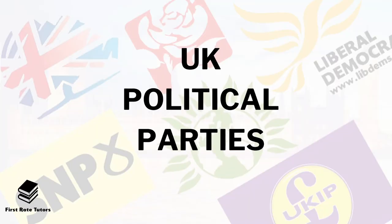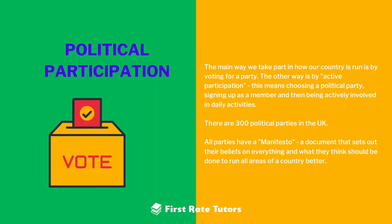When it comes to the UK and specifically its political parties, they tend to lean towards the left or the right. Now the one thing you need to remember is to do with political participation. Essentially, this means how we as voters take part in how our country is run by voting for a party. This is what is called active participation — we can vote, but also we can be part of political parties.